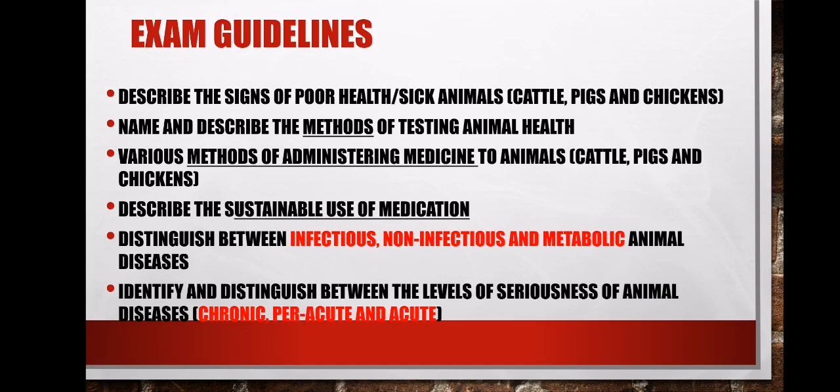The last part we must check is the differences in terms of the level of seriousness of diseases. The danger of diseases is not the same — some diseases take a long period of time before they kill the animal, while others take a short period of time and quickly kill the animal. We have three levels of seriousness: chronic, peracute, and acute diseases. We will look at all of that in different segments, starting with the methods of testing animal health.